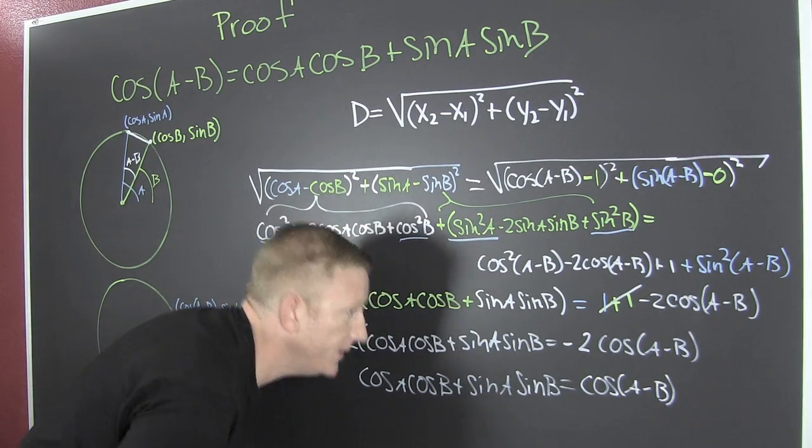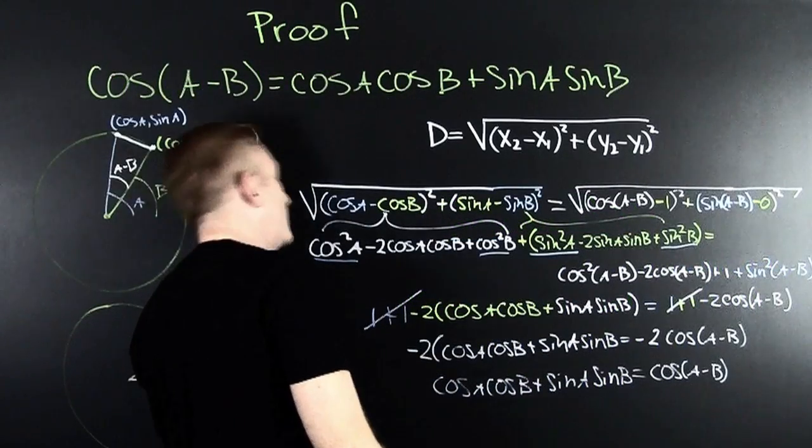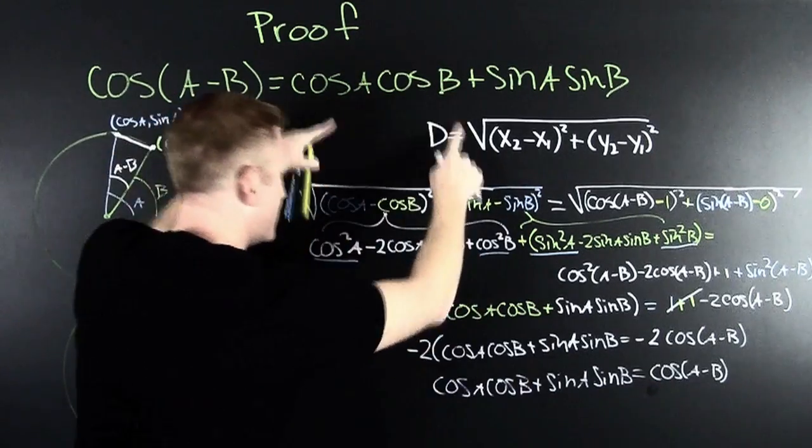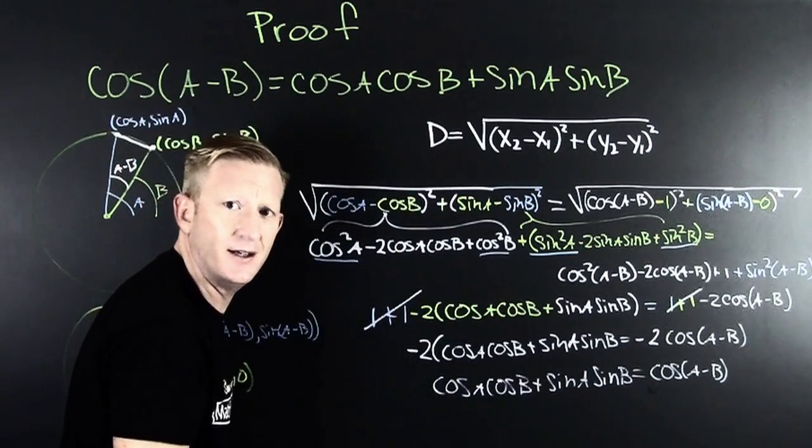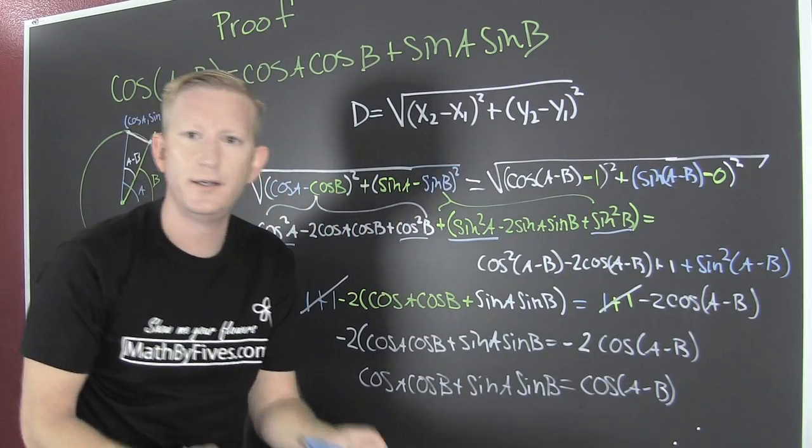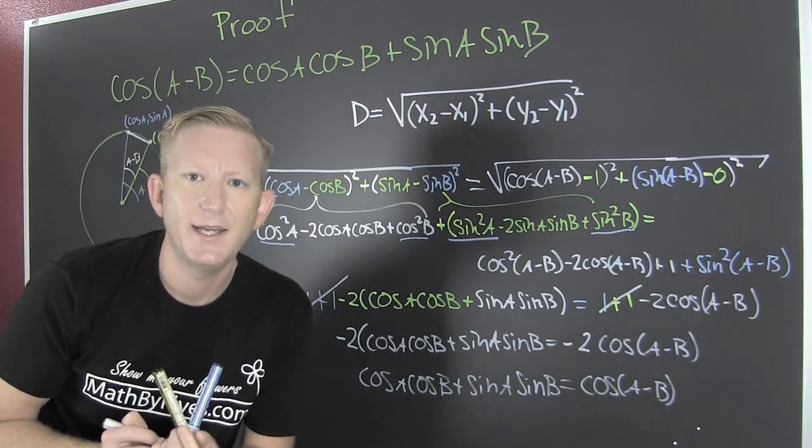And what do we see? This guy right here, where the cosine of A minus B is that stuff. Yeah! It has been shown.